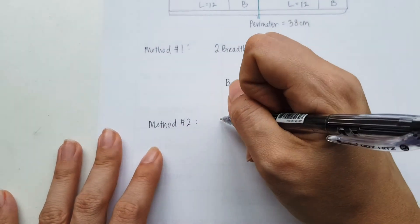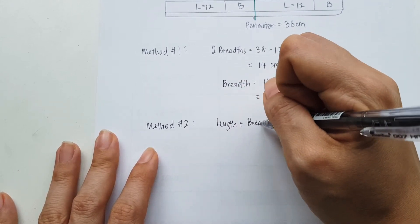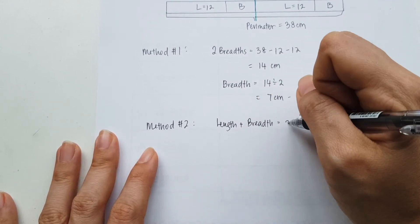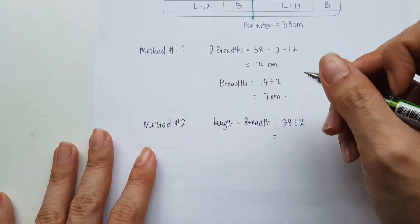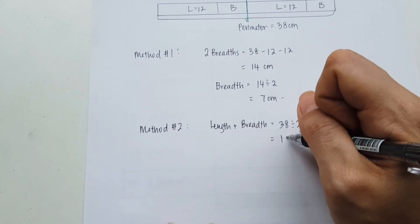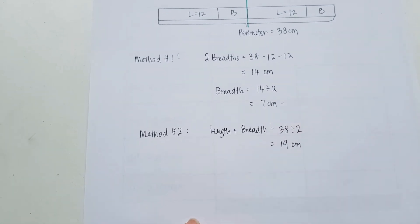So I'm going to write down here. A length and a breadth is going to be equal to 38 divided by 2, which is going to be 19. Yes, 19 centimeters.